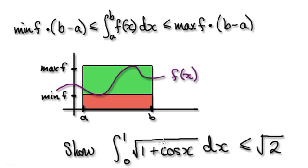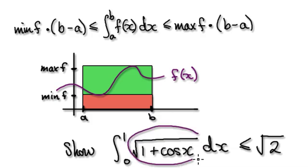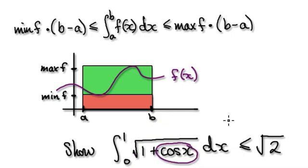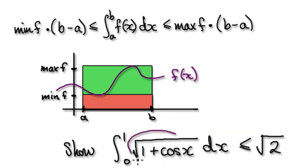To show this, think of this as being your function. What's the maximum value that this function can be? Well, the highest value that this function can be is when cos of x is at its highest — and cos of x is at its highest when it's 1. If you look at the graph of cos of x, the highest value it can be is 1, so the highest value that this whole thing can be is 1.